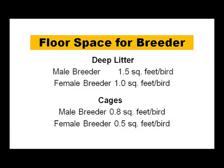For deep litter floor space, male breeders require 1.5 square feet per bird and females 1 square foot per bird. In cage systems, male breeders need 0.8 square feet per bird and females 0.5 square feet per bird.